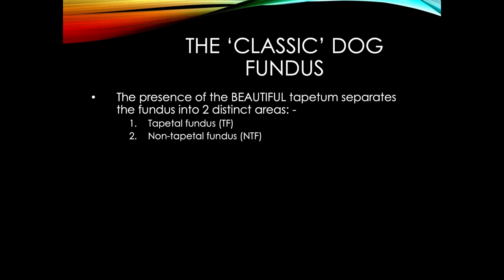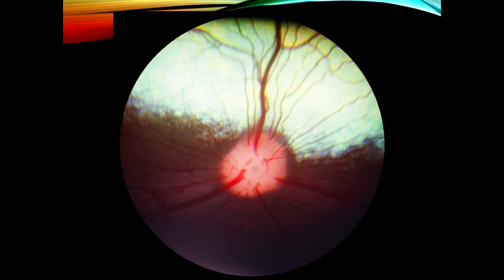Now imagine the classic dog fundus. We get taught to split it into two components right away: the tapetal fundus, which is this bright colorful structure, and the non-tapetal fundus, which is dark. The tapetum sits beneath, closer to the outside of the eye, closer to the choroid.